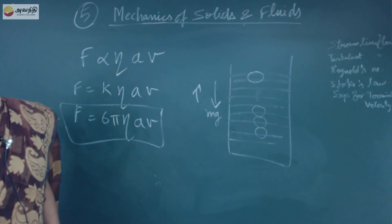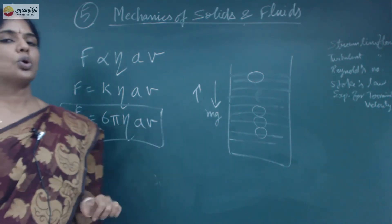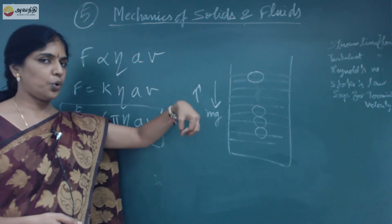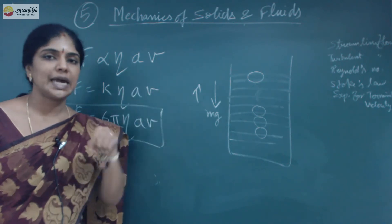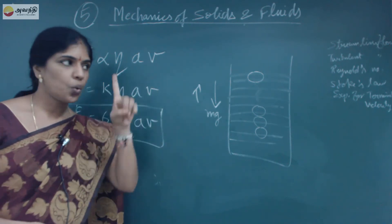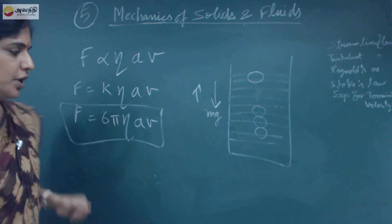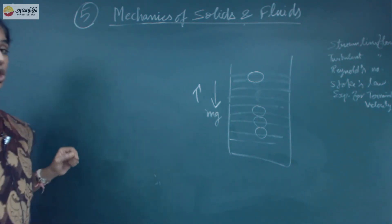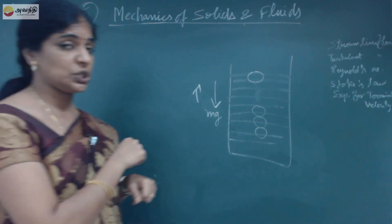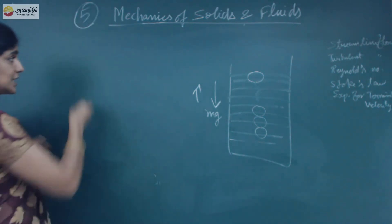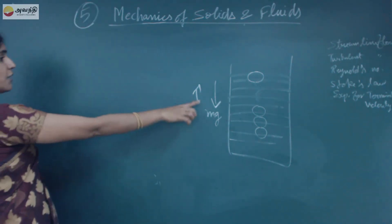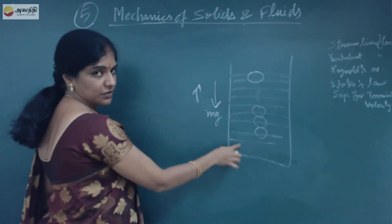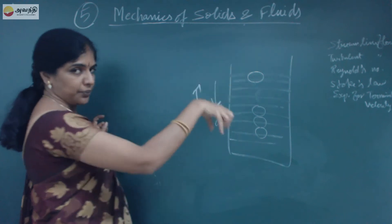Now we will discuss how to find the terminal velocity. When a sphere is dropped into a highly viscous liquid, it moves vertically downward under its weight. At a certain point it reaches a constant velocity — the terminal velocity. Two forces act upward: the viscous force and the buoyant force, while the weight acts downward.